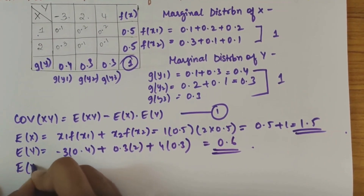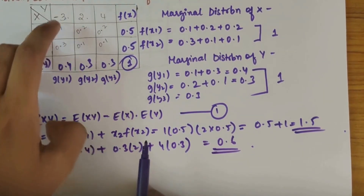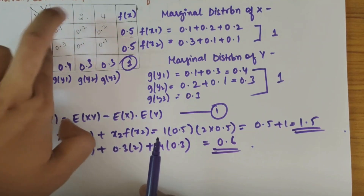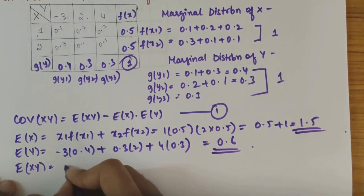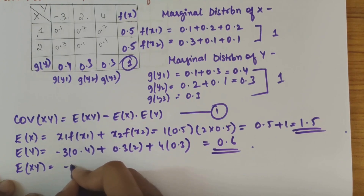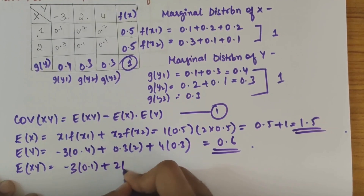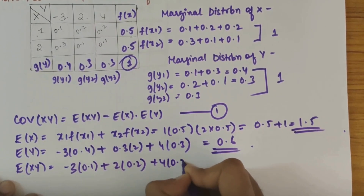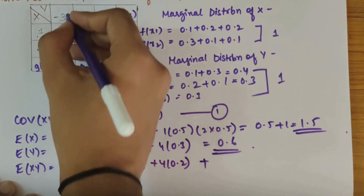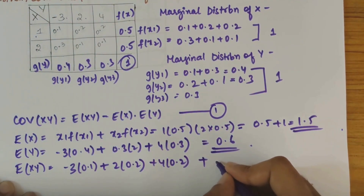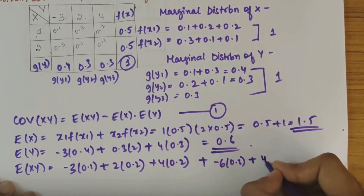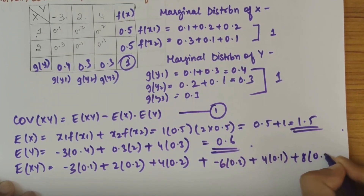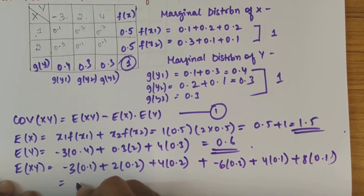Next let's find E(xy). E(xy) is x1·y1 into g11 plus x1·y2 into g12 plus x1·y3 into g13, and so on. So: 1 into minus 3 into 0.1, plus 2 into 0.2, plus 4 into 0.2, then 2 into minus 3 into 0.3, plus 4 into 0.1, plus 8 into 0.1. When we solve this we get 0.3.